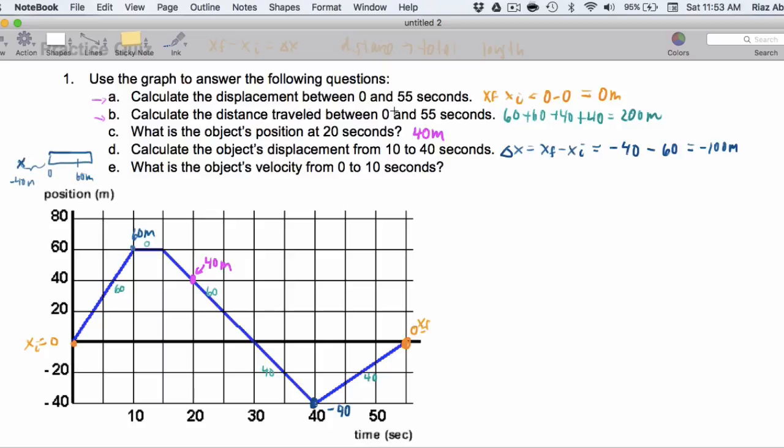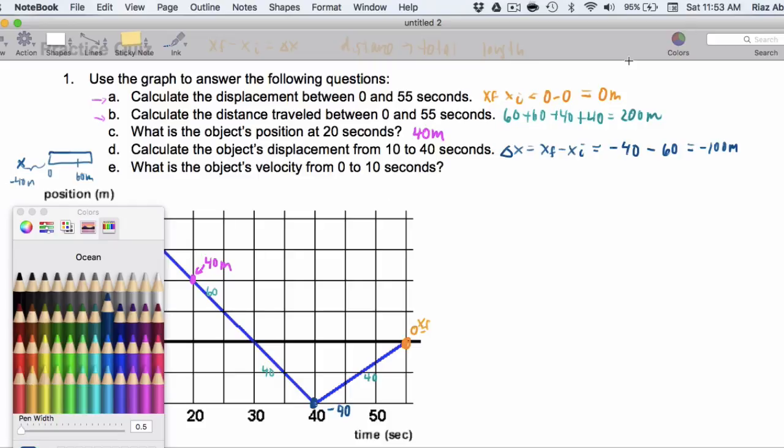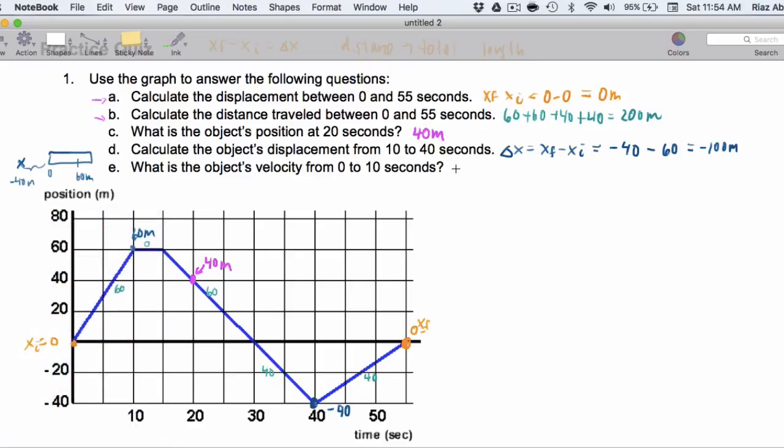Now, what is the object's velocity from 0 to 10 seconds? Let's just remember the velocity is going to be the slope. And I'm going to use physics notation, so V0 is going to be the rise, delta x, over the run, delta t. See how I'm mixing my language, but keeping it clearly physics.